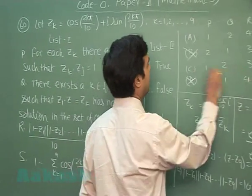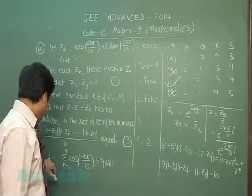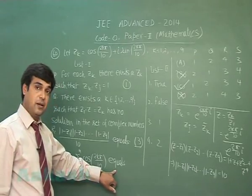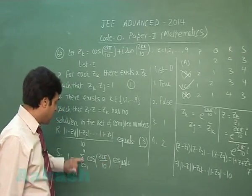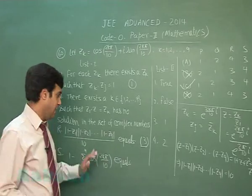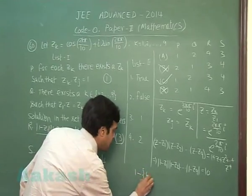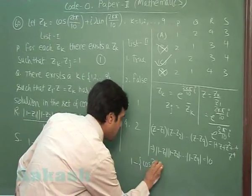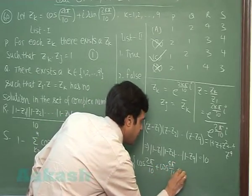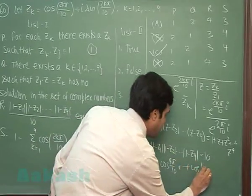Let's check out the fourth one. The fourth one: 1 minus summation cos(2k pi by 10). When I substitute k equals 1 to 9, I simply obtained a series for cosine. That is it reads 1 minus cos(2 pi by 10), cos(4 pi by 10) up to cos(18 pi by 10).